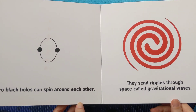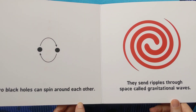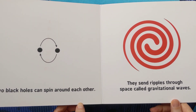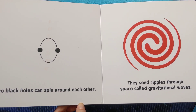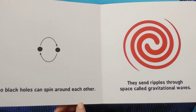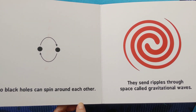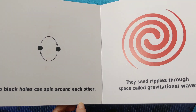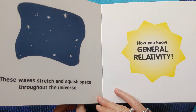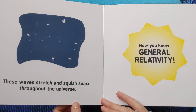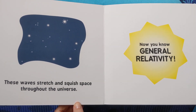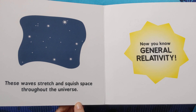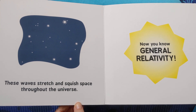Two black holes can spin around each other. They send ripples through space called gravitational waves. These waves stretch and squish space throughout the universe.